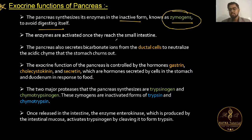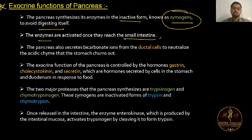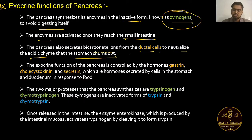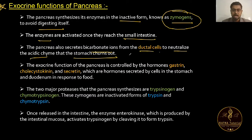The enzymes are activated once they reach the small intestine. The pancreas also secretes bicarbonate ions from ductal cells to neutralize the acidic chyme coming from the stomach, making the environment suitable for enzyme action. Pancreatic juice is alkaline and neutralizes the acidic chyme.